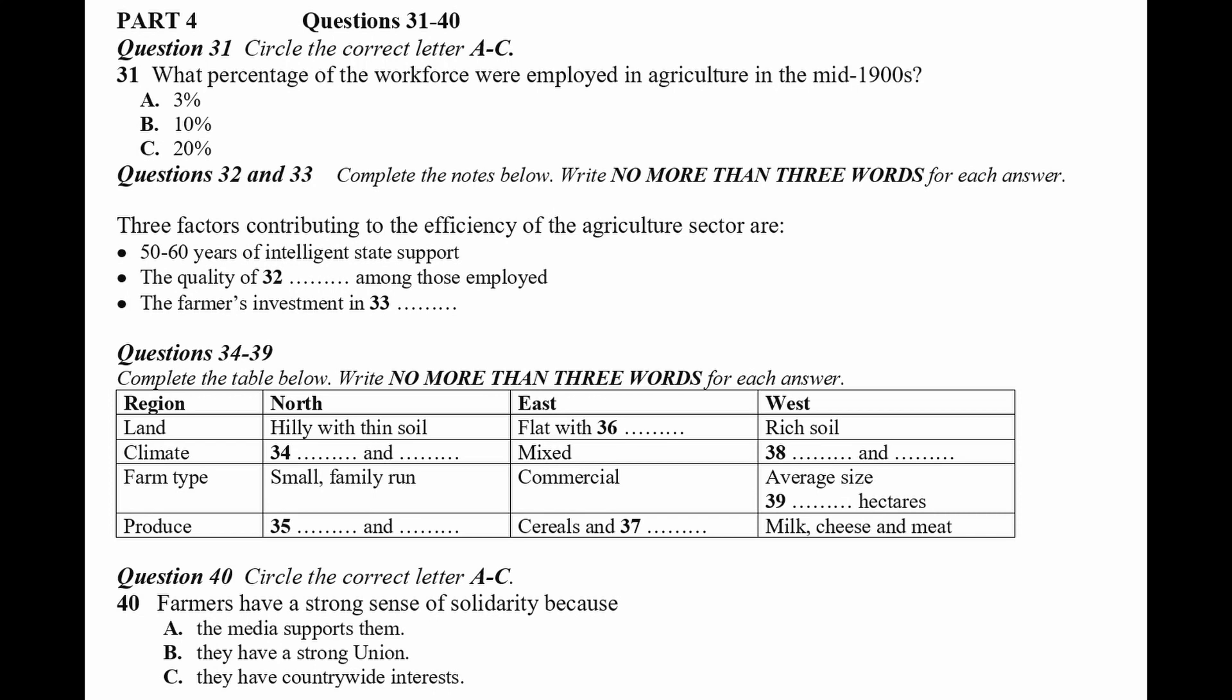This figure is especially impressive, I think, when you bear in mind how very small a percentage of the UK workforce is employed in agriculture. This is not a recent development. You'd have to go back to 1750 or so to find a majority of the workforce in this country working in agriculture. By the middle of the next century, in 1850 that is, it had fallen sharply to 10%, and then to 3% by the middle of the 20th century. And now just 2% of the workforce contribute 20% of GNP.